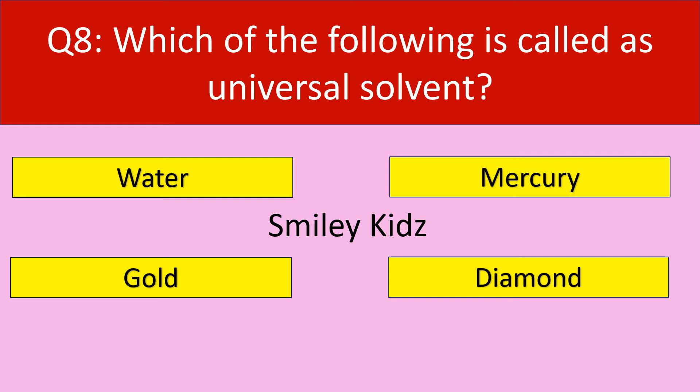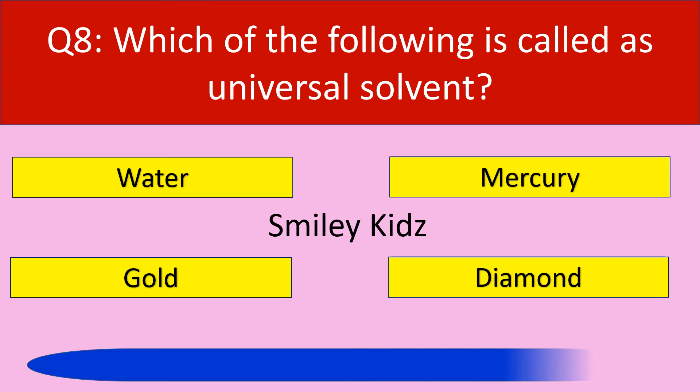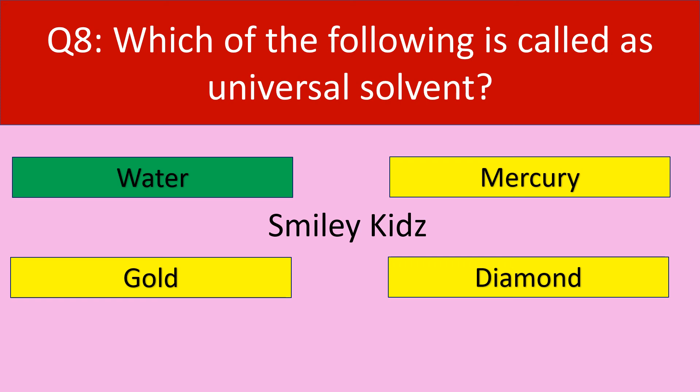Question number eight. Which of the following is called as universal solvent? Options are water, mercury, gold, and diamond. Your time starts now. Your time is up. The correct answer is water. Water is called as universal solvent.